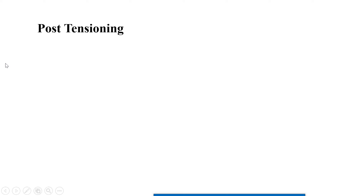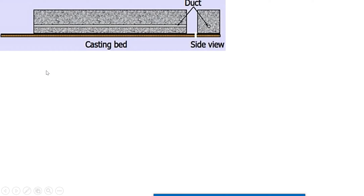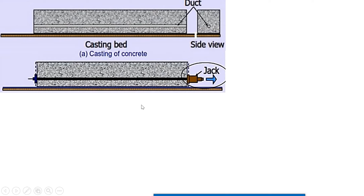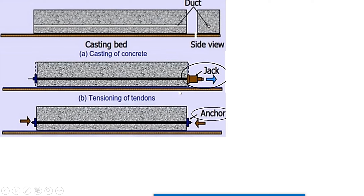The next term is post-tensioning — the name means tensioning is done after the concrete has hardened. The process: we have the concrete bed, and at the time of casting we keep a PVC pipe (duct) and do the casting. Once cast, we place the tendons through the duct, anchor one end, and apply sufficient pull using hydraulic jacks or pulling devices from the other end, keeping the cable under sufficient tension.